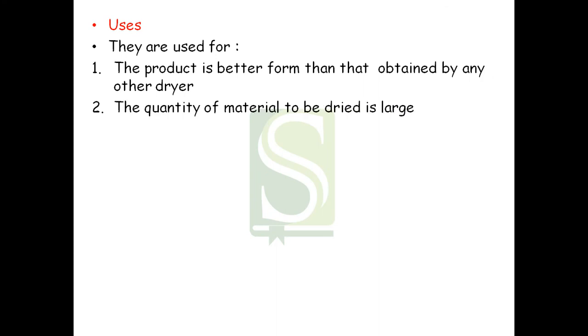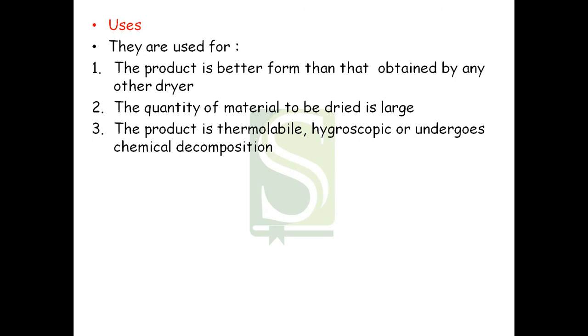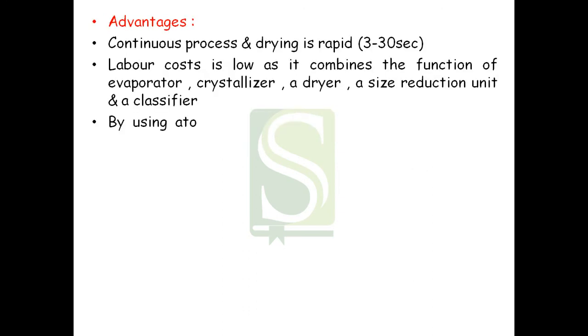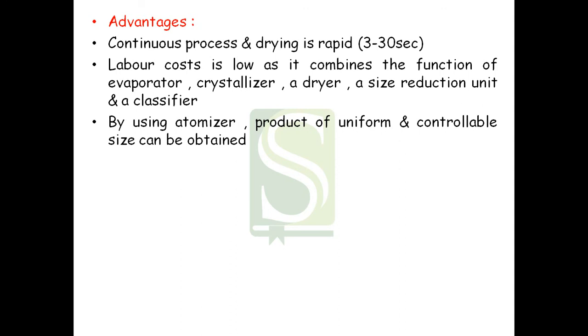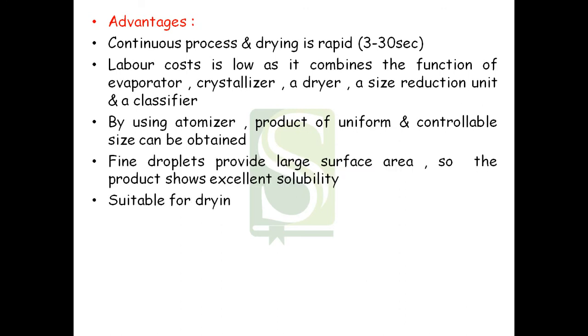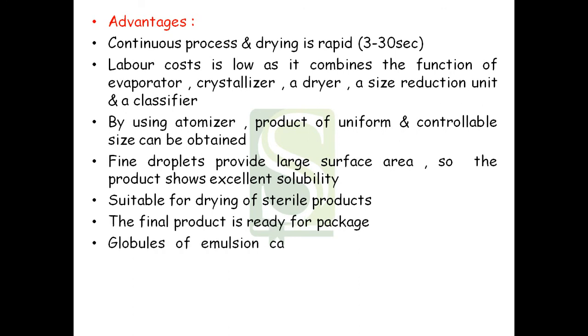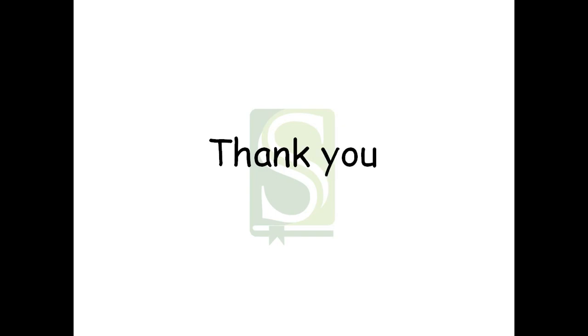Uses: the spray dryer gives better results than other dryers when the quantity of material is large, and can be used for thermolabile hygroscopic materials and materials that undergo chemical decomposition. Advantages: it is a continuous, rapid process; labor cost is low as it combines the functions of evaporator, crystallizer, dryer, size reduction unit, and classifier; product of uniform and controllable size can be obtained; fine droplets provide large surface area, giving excellent solubility; it is very suitable for drying sterile products; the final product is ready for packing; and emulsion globules can be dried easily. Disadvantage: it is a bulky and expensive equipment and not easy to operate and clean.